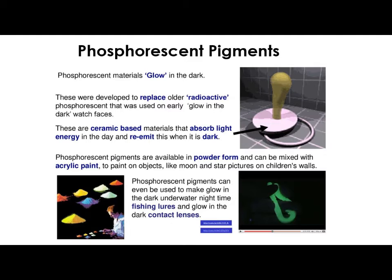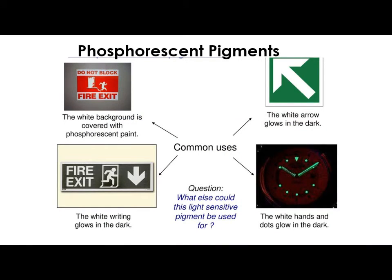Some other applications include warning signs and exit signs — if suddenly the light was lost in a building, these would light up. In an aircraft, if it plunges into darkness, phosphorescent pigments are used on the floor to show a quick exit out of the aircraft. Sometimes they're used on watch hands to make them light up in the dark. So phosphorescent pigments take in light energy during the day and re-emit it at night — glow in the dark.